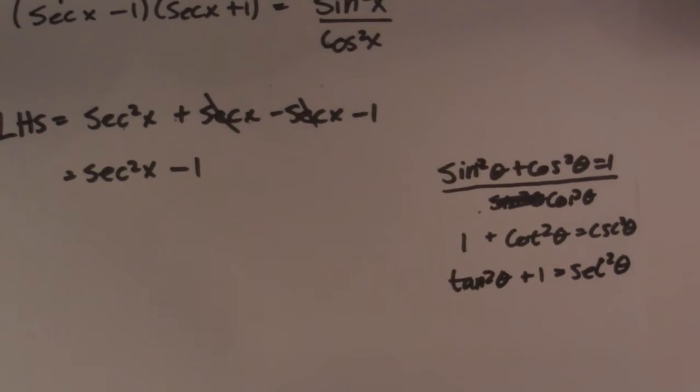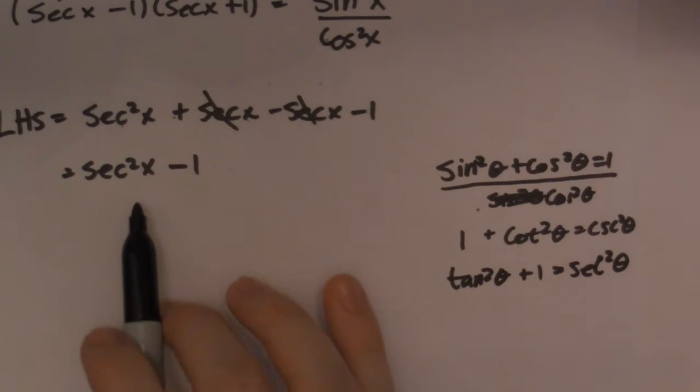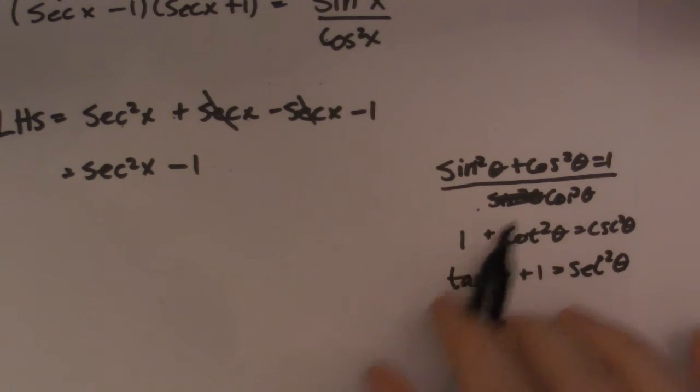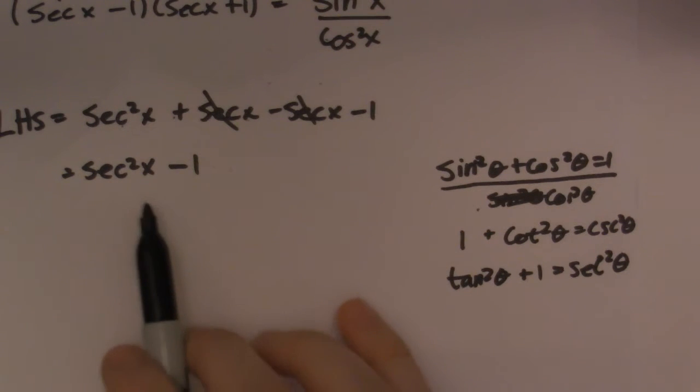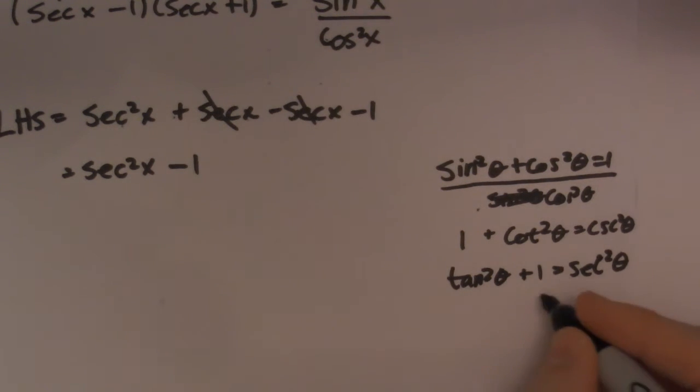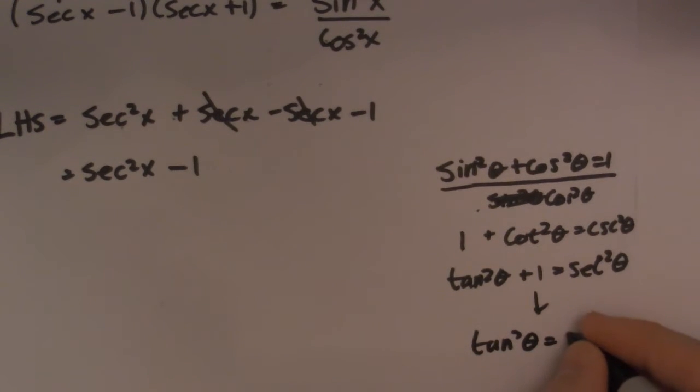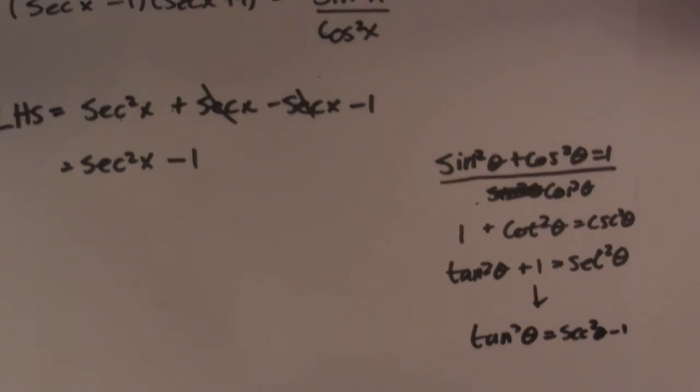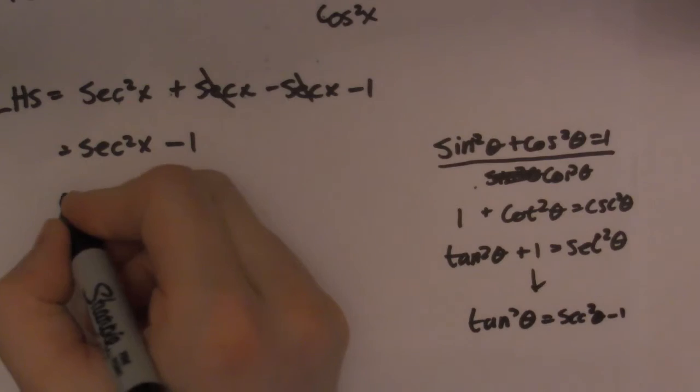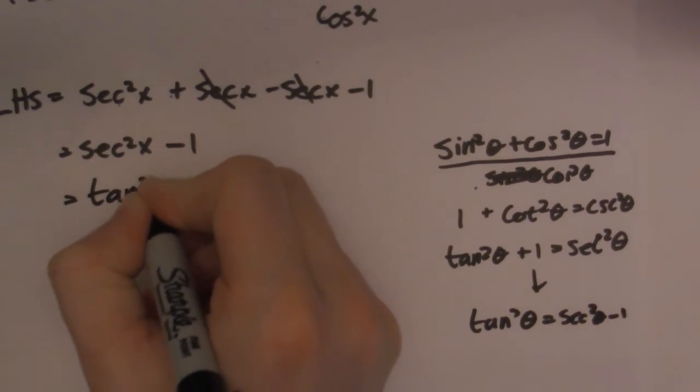So a lot of times what I tell my students is if you get a secant squared or cotangent squared or cosecant squared, you might want to think about your Pythagorean identity. It's not always the case, but generally, you know, it's a good strategy if you're not sure what to do. So you can see that I have secant squared minus one. So this guy rearranges to tan squared theta is equal to secant squared theta minus one. So I can use that fact that this guy is tan squared theta. So tan squared theta.